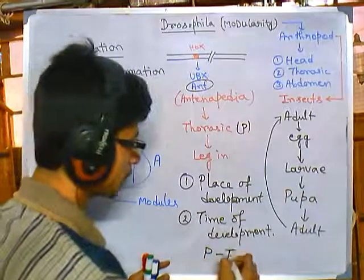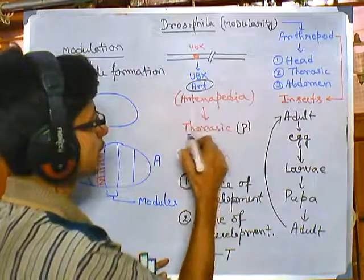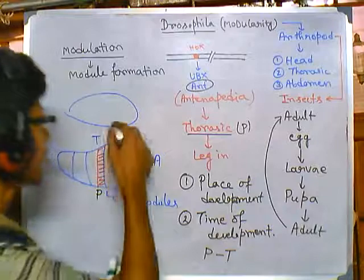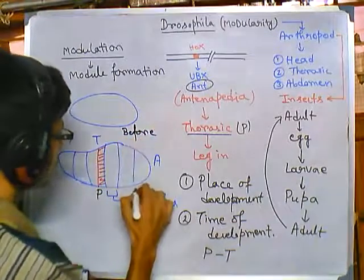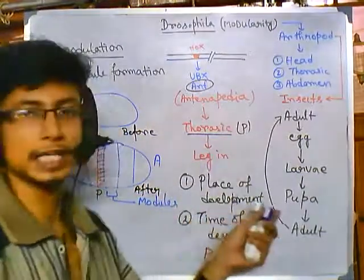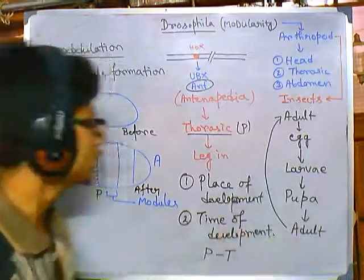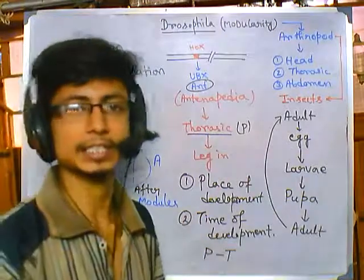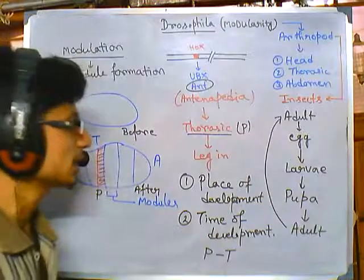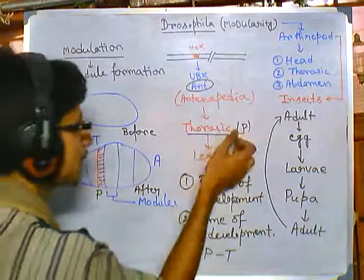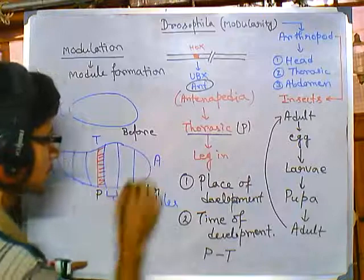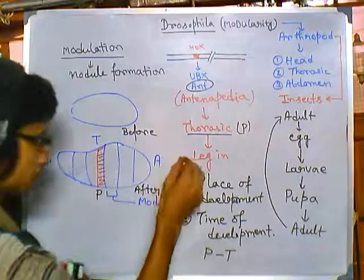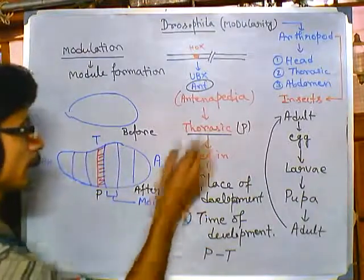For Antennapedia, the place of expression is the thoracic region and the time of expression is after fertilization — during larval development from the egg. If either of these two things changes during the developmental pattern, it will change the development of the embryo. For example, if Antennapedia starts to express in the abdominal part instead of the thoracic part, then legs will come out from the abdominal segment.